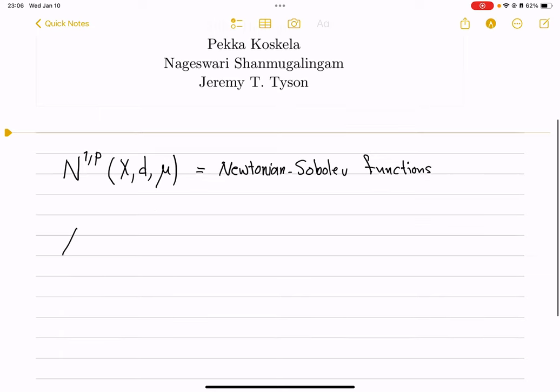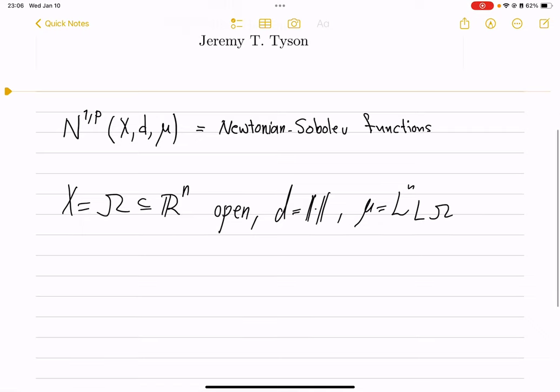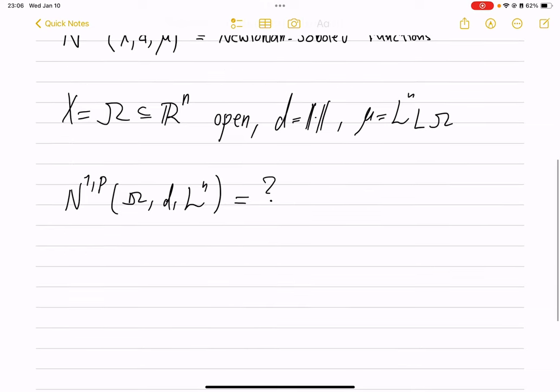For example, if we take our familiar R^n or more generally an open subset of R^n, and our distance becomes the Euclidean distance and our measure becomes the Lebesgue measure restricted to that set, what functions do we get as the N^{1,p} of this omega? Do we get anything familiar?